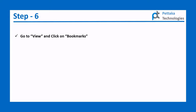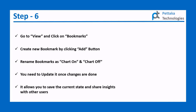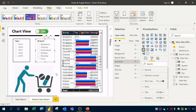In Step 6, go to View and click on Bookmarks. Create new bookmarks by clicking the Add button and rename them as 'Chart On' and 'Chart Off'. Update the bookmark after making changes in the Selection Pane. This saves the current visual state and allows you to share insights with other users.